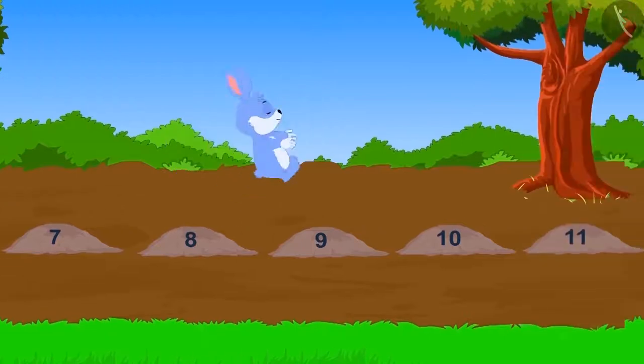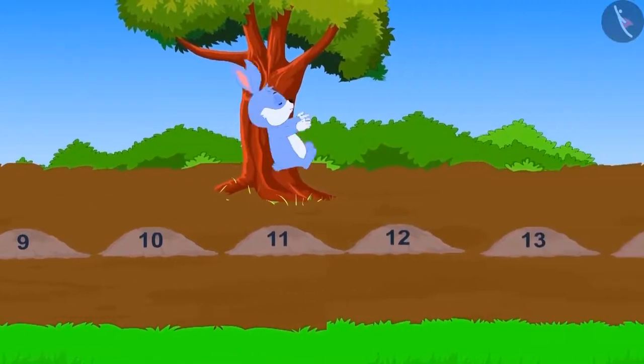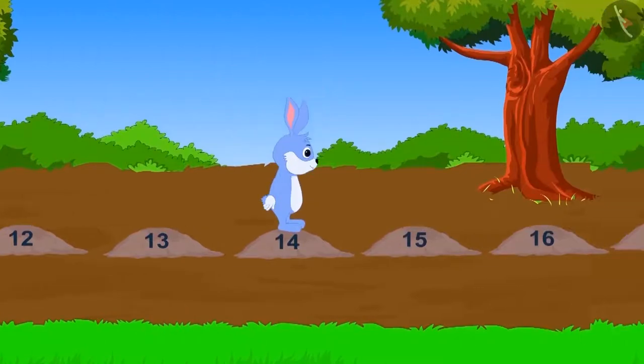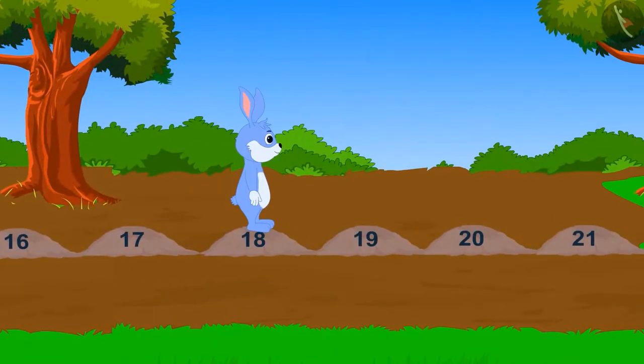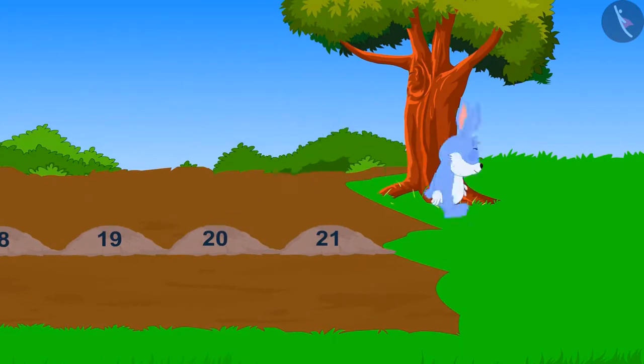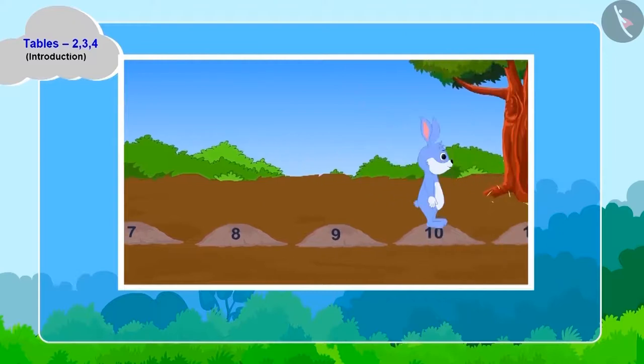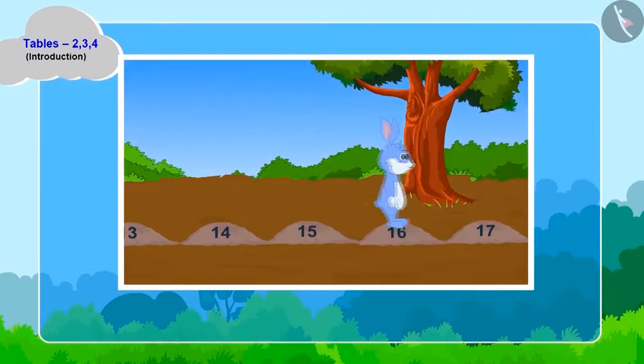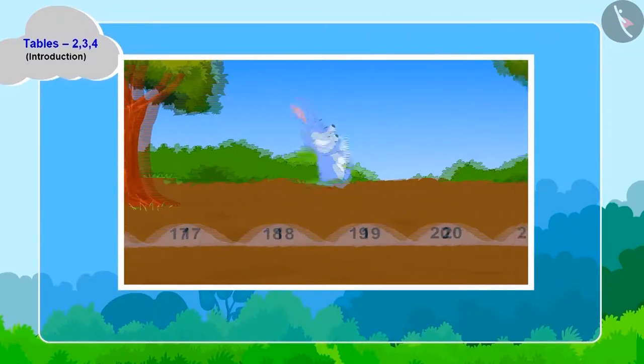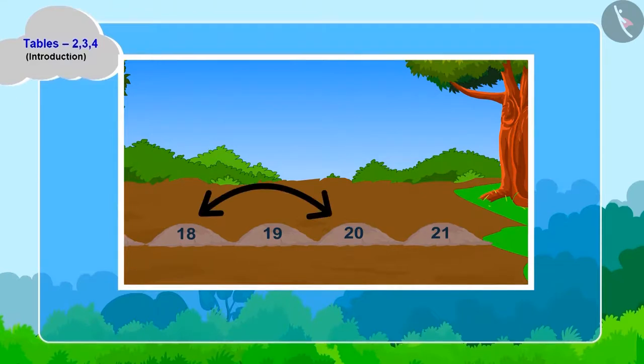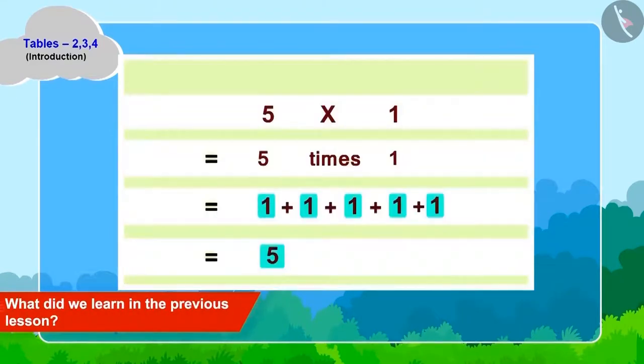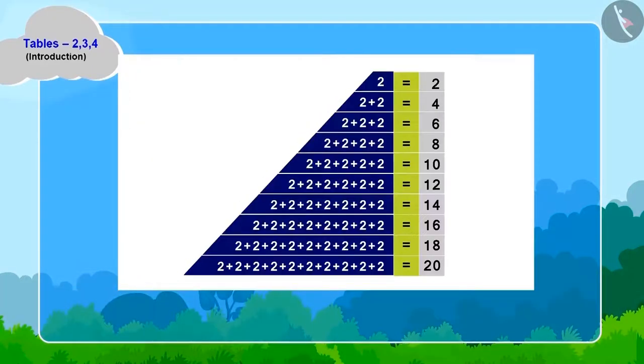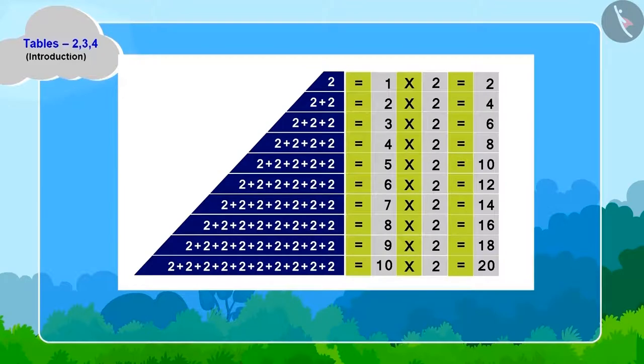This way, jump after jump, bunny moved two steps ahead in every jump and in the end, crossed over to the other side of the swamp from the twentieth stone. Children, do you find something unique in bunny's jumps? Two is being added to every jump of bunny. And what did we learn in the previous lesson? Repeated addition can also be written in the form of multiplication.